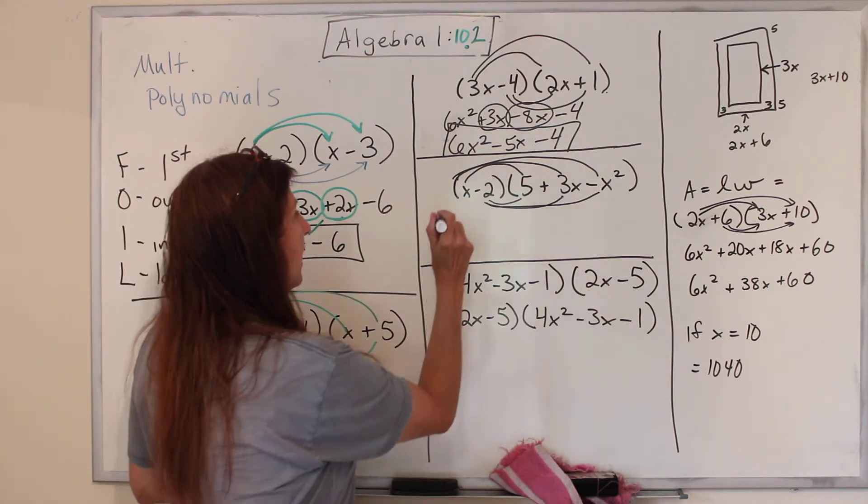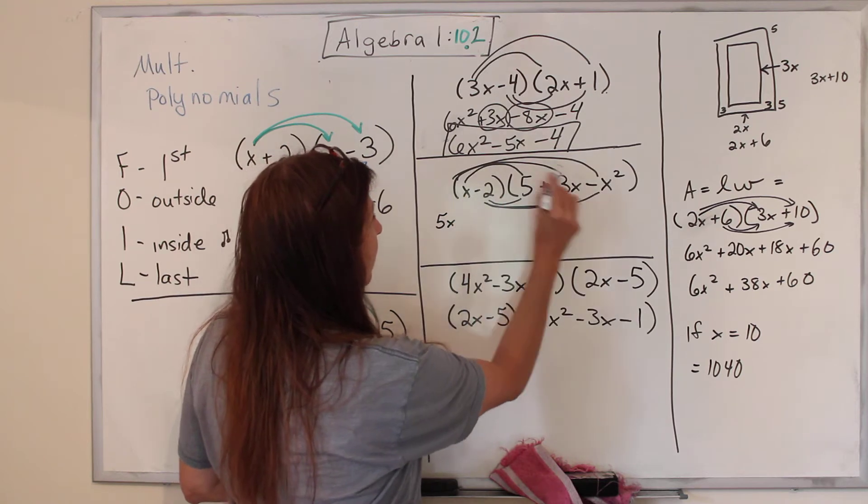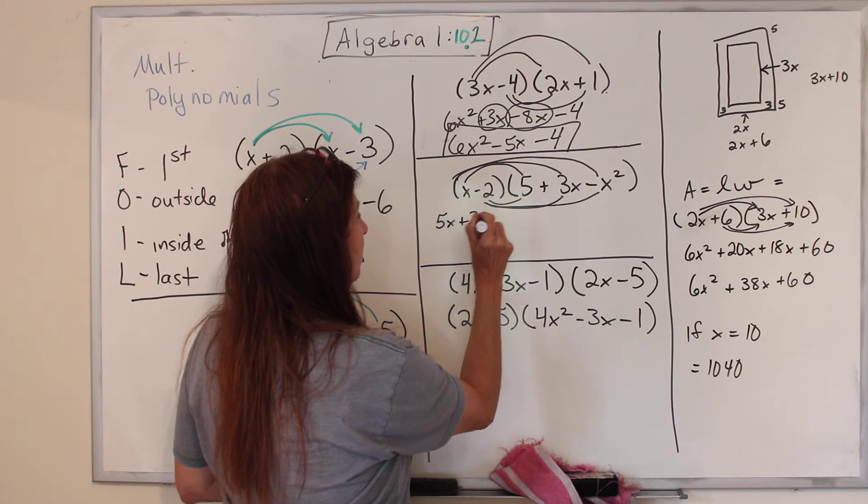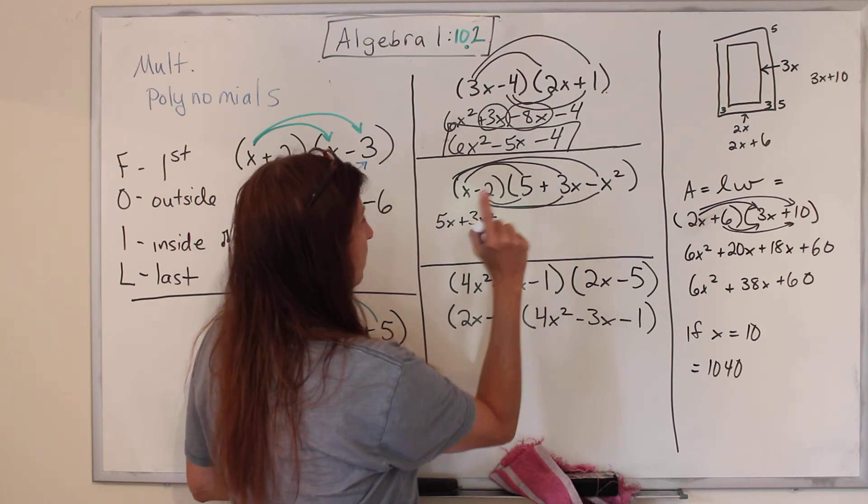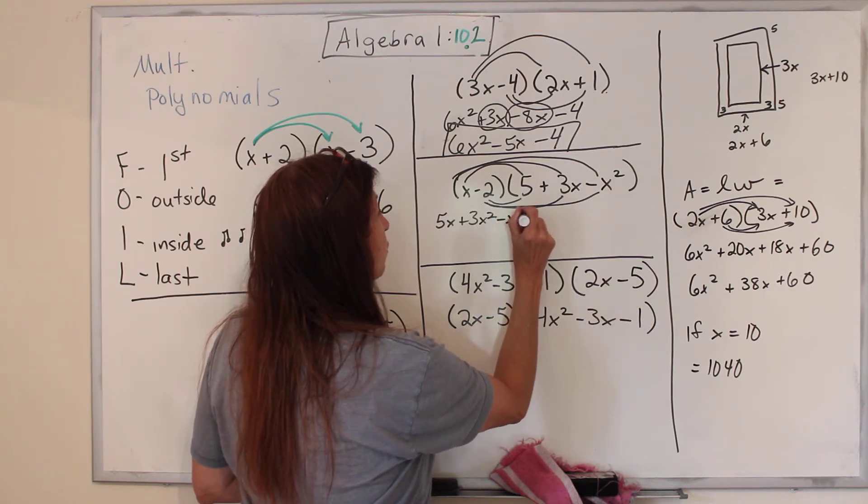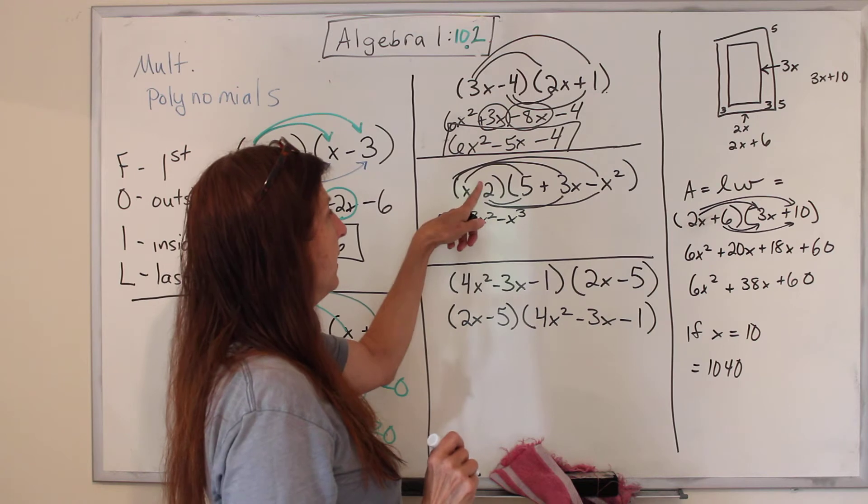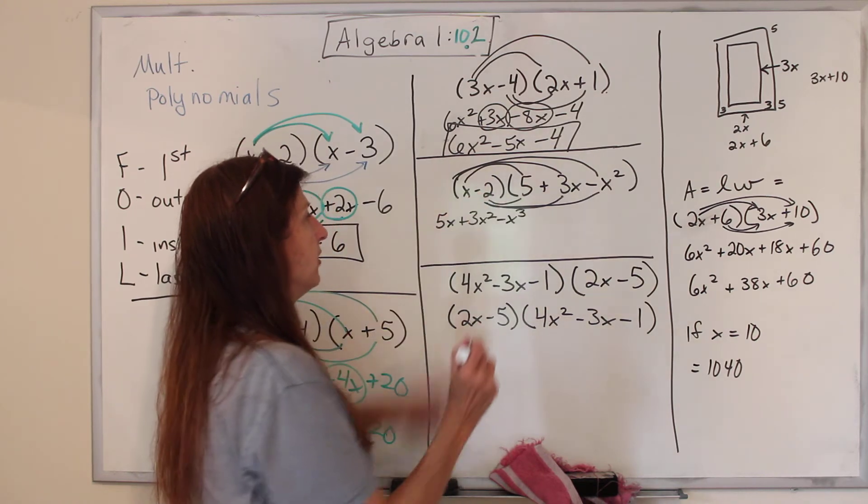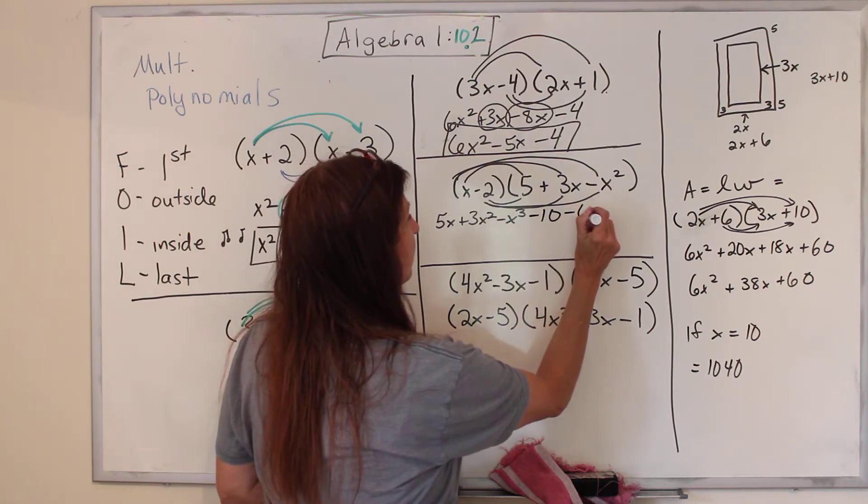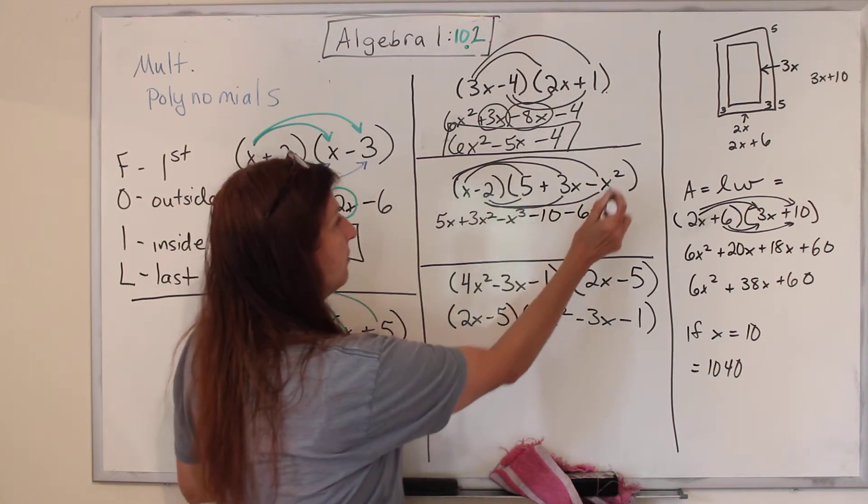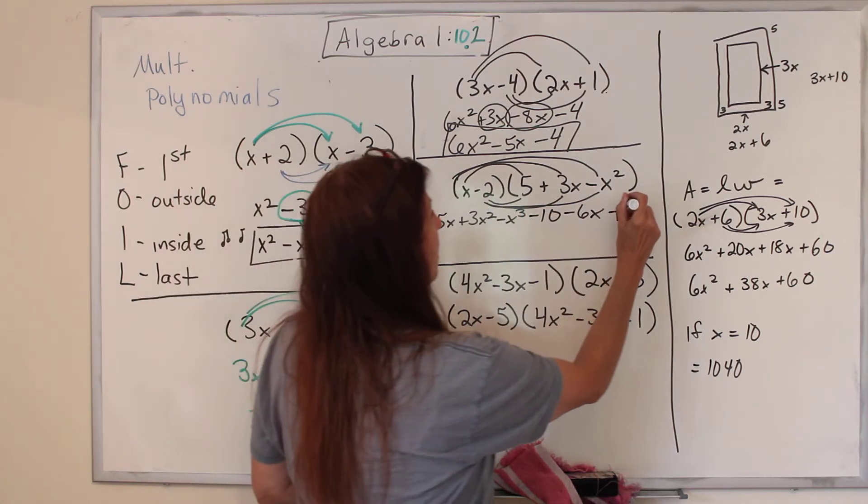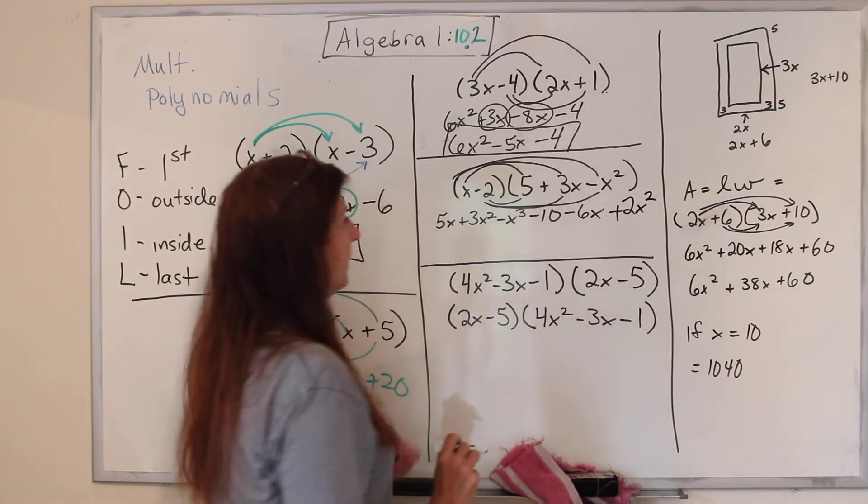x times 5 is 5x. x times 3x is plus 3x squared, because I have two x's. x times negative x squared is negative x cubed, because I have three of them. Now we're going to do the bottom. Negative 2 times 5 is negative 10. Negative 2 times 3x is negative 6x. And negative 2 times x squared is positive, because two negatives make a positive, 2x squared.